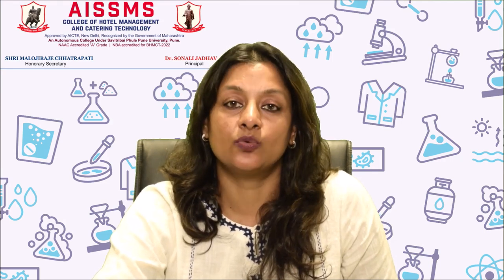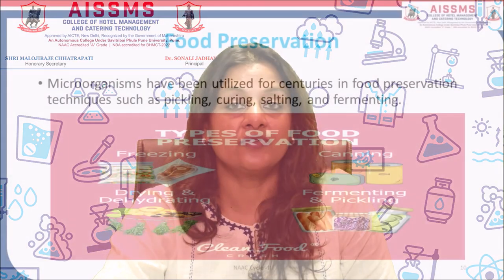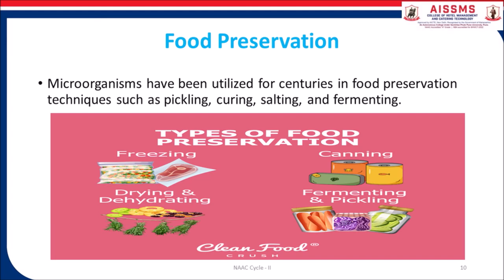Let's move to the next topic: food preservation. Microorganisms have been utilized for centuries in food preservation techniques such as pickling, curing, salting and fermenting. These methods create conditions unfavorable for the growth of spoilage and pathogenic microorganisms, thus extending the shelf life of food products. For example, the high salt concentration in cured meats inhibits microbial growth, while the acidic environment in pickled vegetables prevents spoilage.